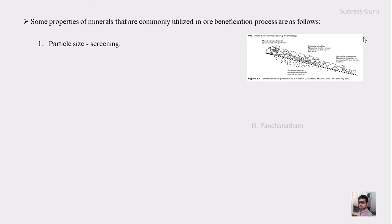The first and foremost property is particle size, where just screening is sufficient. As you can see, there is a screen here — like a sieve shaker. According to the size, the material is classified. Some ore may be coarser in size and some may be finer; by separating with the help of a sieve shaker you can do this. That is the very first property used for the ore dressing process.